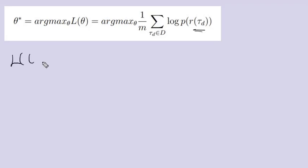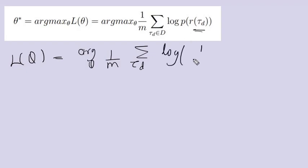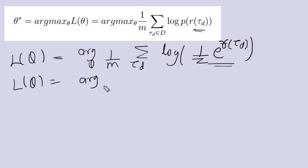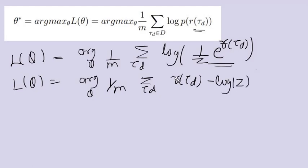So let's solve this. We take L of theta — that is max over theta of 1 by m summation over the trajectory of human data — and we substitute the value of probability, which will be the reward of the human trajectory. Once we solve the log, e raised to r of tau of t will come down as r of tau of t, and log of 1 by Z will become minus log of Z, where Z is the partition function.